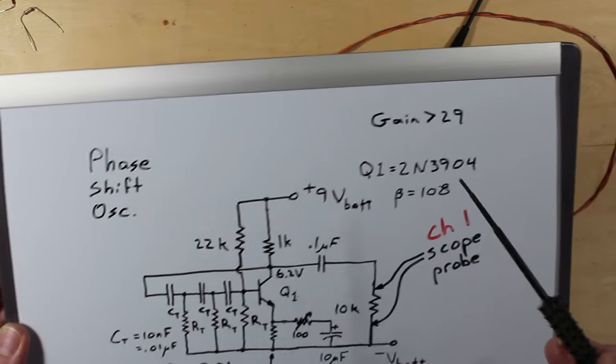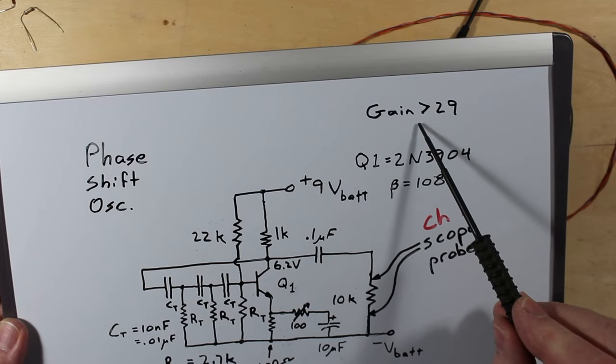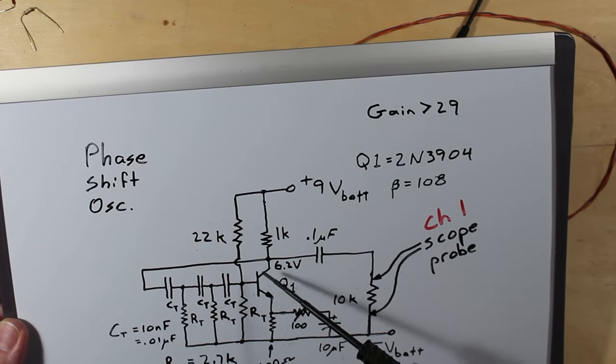It's best operating position is just after it starts. We've got just enough gain, which for this particular oscillator needs to be about 29.